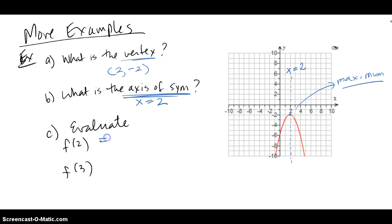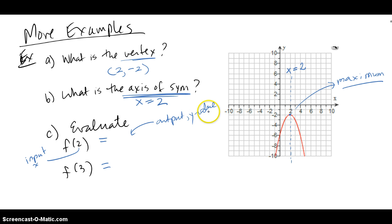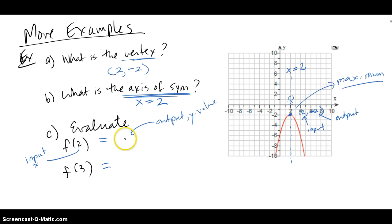The other thing they want us to do is evaluate these two outputs from the inputs given. Remember 2 is the input or the x value and we're looking for the output or the y value. We're supposed to get this from the graph because we don't have an equation. So the input is x — I go stand at the x coordinate of 2, and the y coordinate is right here because I have that ordered pair, the same as the vertex: 2, negative 2. So input is 2 and output is negative 2.